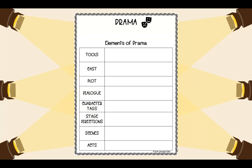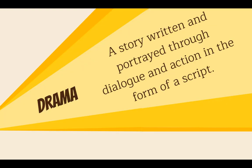So we're talking about drama. First we're going to define what it is, and then we're going to talk about some of the elements of drama and what is used in a play whenever it's being performed. Drama is a story written and portrayed through dialogue and action in the form of a script. Anytime you are seeing drama — another word for that is a play — you will have a script that gives you the dialogue and the action of the story, describing everything that's happening, the characters, and all of that.